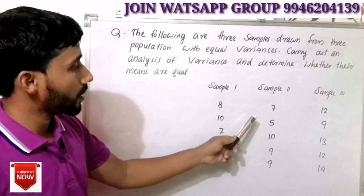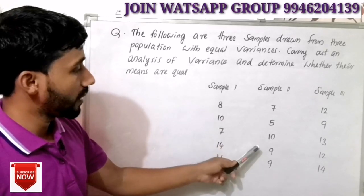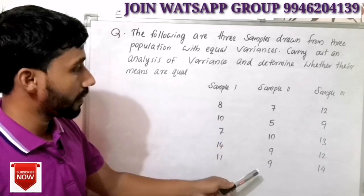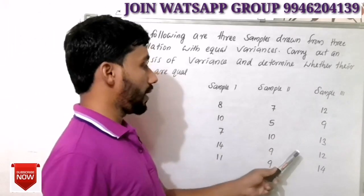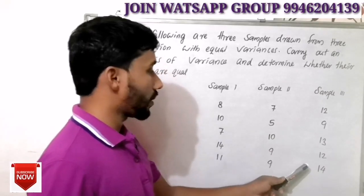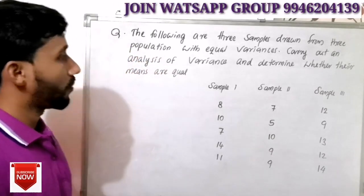Sample 2 values: 7, 5, 10, 9, 9. Sample 3 values: 12, 9, 13, 12, 14.